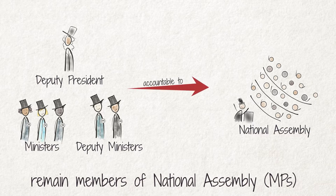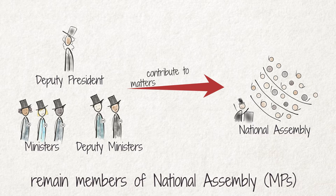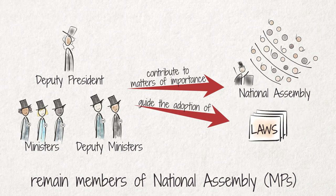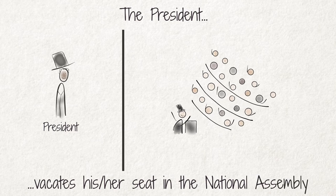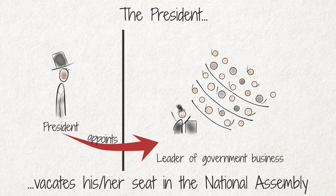Each minister is accountable to the National Assembly for his or her department's work. Ministers also contribute to discussions on matters of importance in the assembly and usually guide the adoption of laws in parliament. The president, however, vacates his or her seat in the National Assembly after election to office. The president further appoints a member of the cabinet to be the leader of government business in the National Assembly.